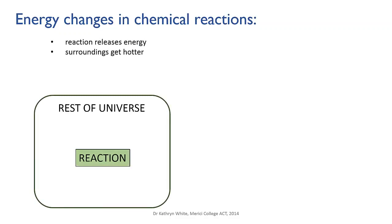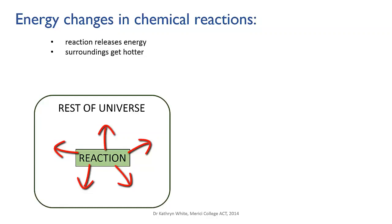If a chemical reaction releases energy, then as the reactants are turning into the products, energy flows from the reacting chemicals out into the surroundings. This energy is now free to move through the rest of the universe. This energy usually takes the form of heat, so we detect the energy change by the surroundings getting hotter. Such a reaction is called exothermic — heat to the outside.